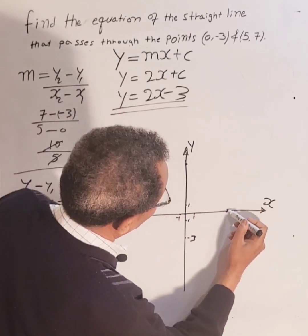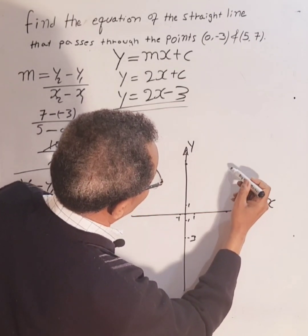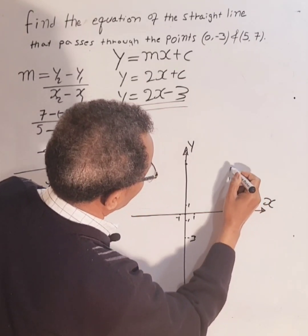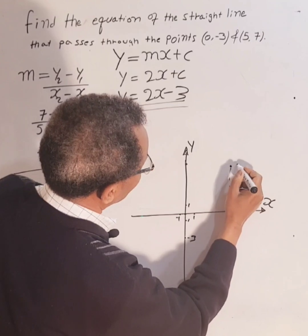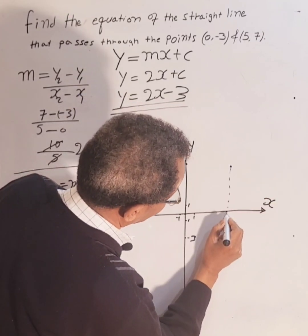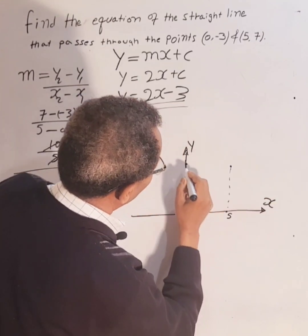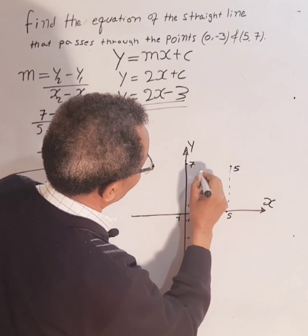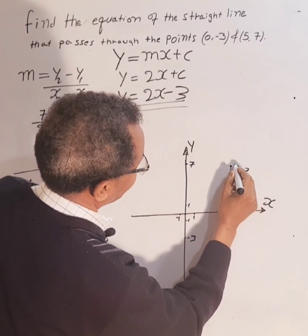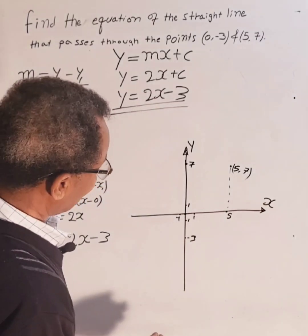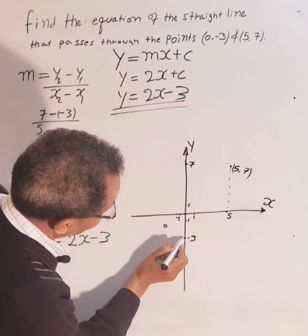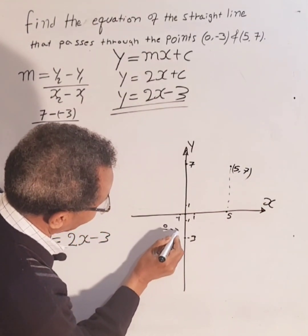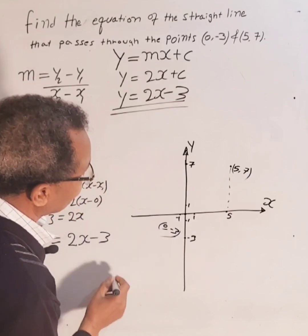This point is x is 5 and this is 7. X is 5, y is 7. And this point is x is 0, y is -3.